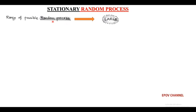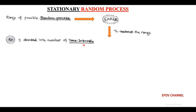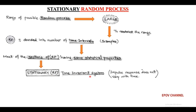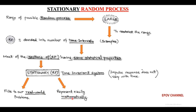Next, we discuss a special case of random process called stationary random process. We consider a large range of possible random processes and restrict this wide range by dividing the random process into a number of time intervals called samples. Out of these sample intervals, most of them have identical statistical properties. Such sections of a random process with identical statistical properties are called stationary random process. These random processes behave as time-invariant systems where the impulse response does not vary with time. In real-world problems, stationary random processes fit satisfactorily and can also be represented mathematically in a precise manner.